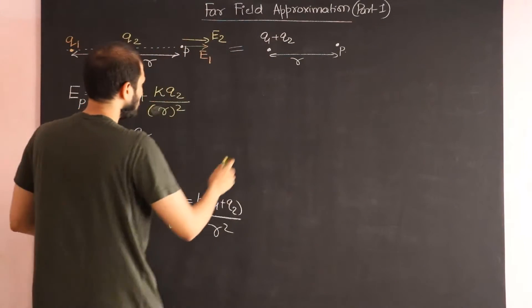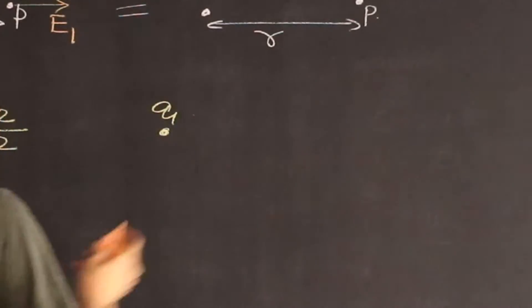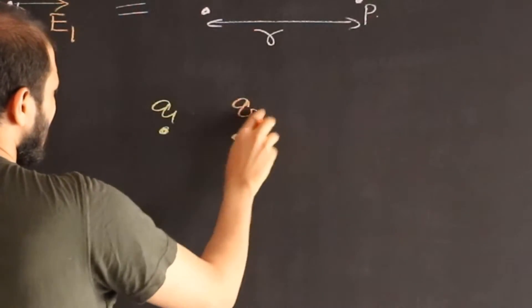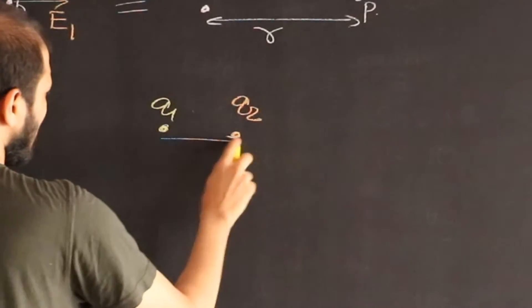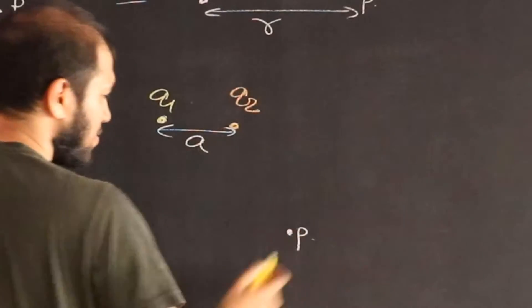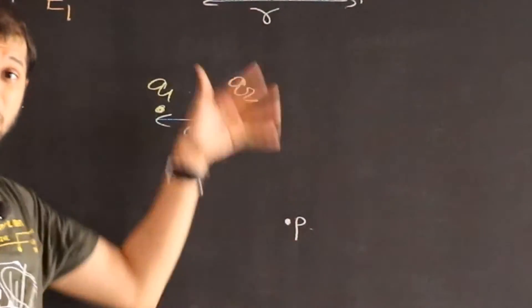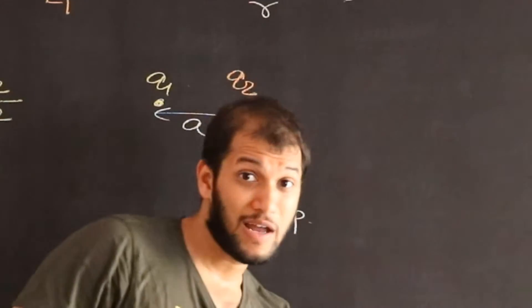Suppose we had the same two charges. Let's consider our second case, Q1 and Q2. And the distance of separation is a. And assume now we go far away at some point P.